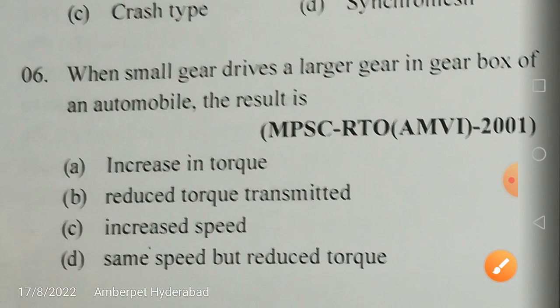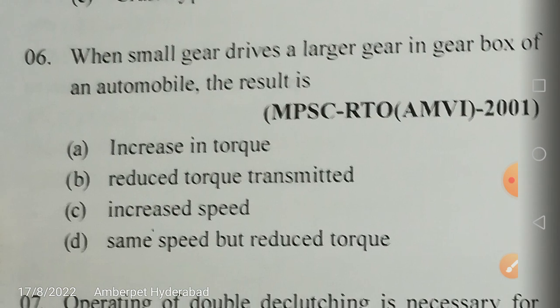When a small gear drives a large gear in a gearbox, the result is an increase in torque. A large gear rotates at small speed because D×N equals constant — diameter times speed is constant. Also, T×N equals constant, so if speed N is less, torque T must be more. Therefore the large gear increases torque.